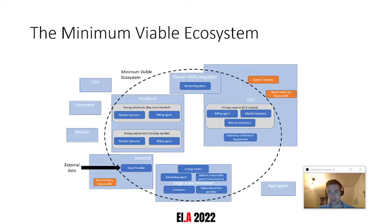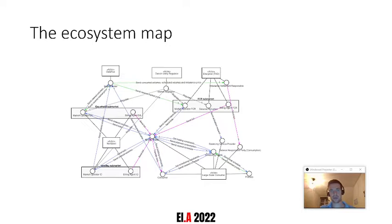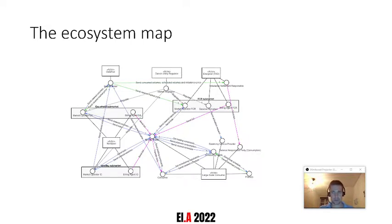We've identified the different roles and agents required in our minimum viable ecosystem. Once we've done that, we can draw the ecosystem map where the different interactions between roles are defined. We really see the advantage of separating roles and agents — the energy trader seems like a complex role in charge of different interactions, but if we assumed a different business model where the energy trader role was taken up by a market intermediary, this could be done relatively easily using the same role, just implemented through a different agent.